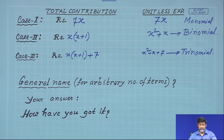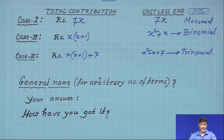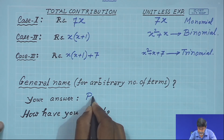Now we are in the position to consider the general structure — the general form where we are considering an arbitrary number of terms. A student suggests: it can be polynomial. How? Like in geometry we have pentagon for 5 sides, hexagon for 6 — similarly for arbitrary number of terms we say polygon — so similarly in this expression, if there are arbitrary number of terms, we can call it polynomial. It is polynomial.